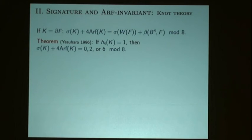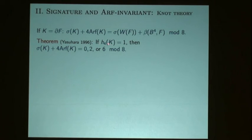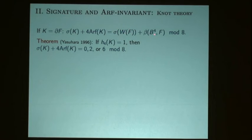One result that follows right away: if you bound a Möbius band, then the signature of the knot and the Arf invariant satisfy a particular equality. The proof: if you bound a Möbius band, the two-fold cover of the four-ball has H2 equal to Z. The signature is plus or minus one, and since the surface is just a Möbius band, the Brown invariant turns out to be plus or minus one also. So it works out.